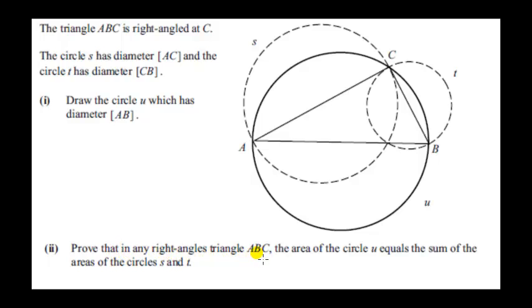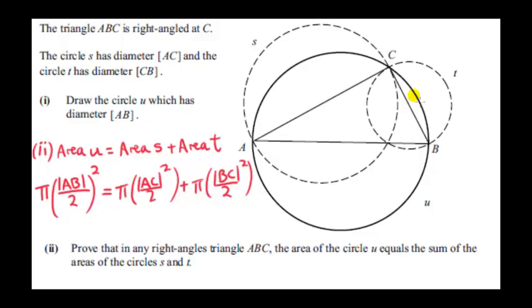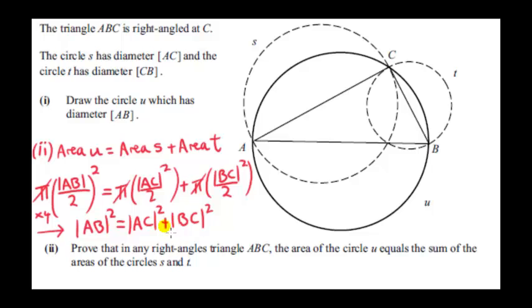We want to prove that in any right-angle triangle ABC, the area of circle U — the circle on the hypotenuse — equals the sum of the areas of circles S and T. The area of any circle is pi times the radius squared. The radius of circle U is AB over 2, the radius of circle S is AC over 2, and the radius of circle T is BC over 2. We can divide all the way across by pi and multiply through by 4, giving AB squared equals AC squared plus BC squared.